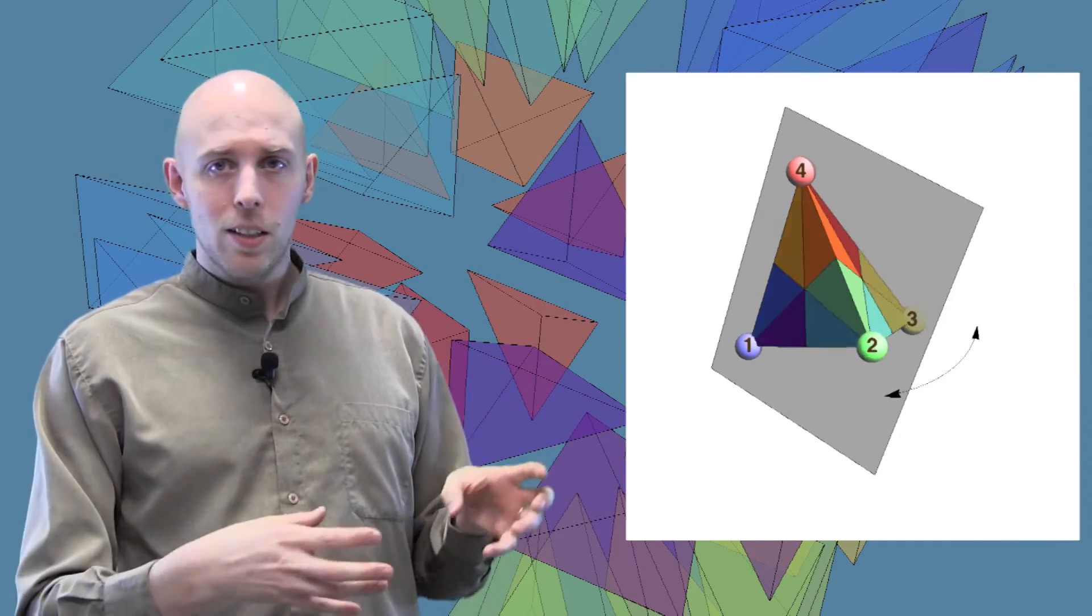So if we look at the group of reflections of the tetrahedron, that corresponds to the group of permutations of the numbers one, two, three, four, which is pretty cool. Now what's even cooler is that if we take all the different planes of symmetry of a tetrahedron, and we slice the tetrahedron by these six different planes, and we chop up the tetrahedron using these planes, and we explode the tetrahedron, we can see that there are exactly 24 pieces, and those correspond to the 24 permutations of one, two, three, four.